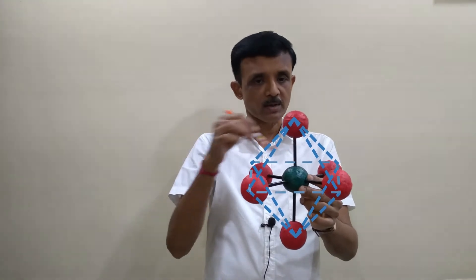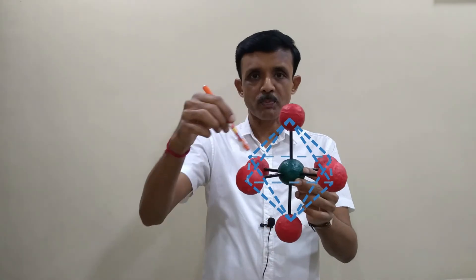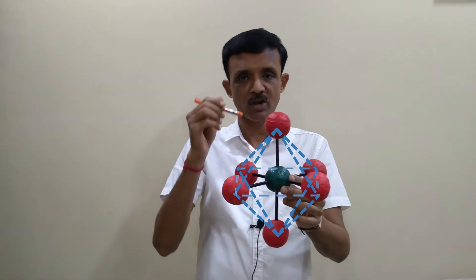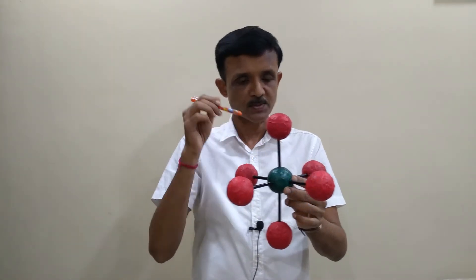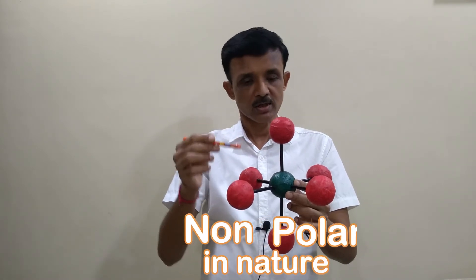One fluorine is placed above and one fluorine below the square planar base, forming one pyramid above and another pyramid below with a common square planar base, giving an octahedral shape — also called octahedral molecular geometry in SF6.